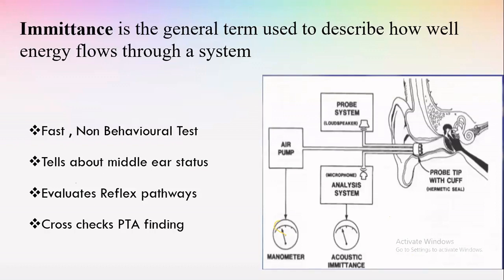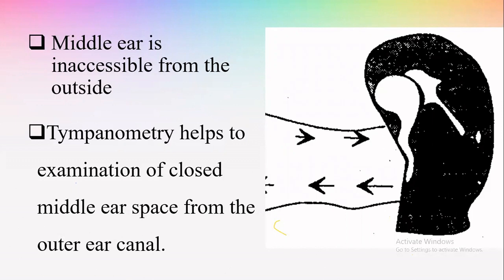It also cross-checks PTA findings, which helps especially in pseudo-hypacusis — those who are malingering. If you use the reflex, you can get an idea about whether that person is malingering or not. The external ear can easily be viewed with an otoscope, but the middle ear cannot be viewed from either the Eustachian tube or the external auditory canal. Tympanometry helps us examine this closed middle ear space from the outer ear canal.